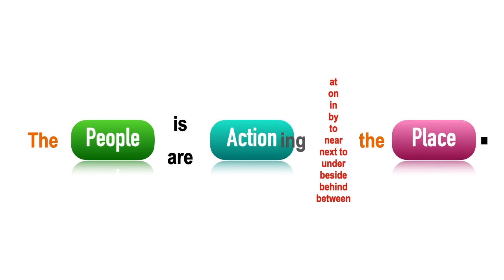Adik-adik dapat lihat sekarang, iaitu object tidak ada di situ. Kerana kadang-kadang action tidak memerlukan object, dan kadang-kadang action yang tertentu tidak perlu ada object. Kita bagi contoh supaya faham bagaimana penggunaan PAP yang tiada O.